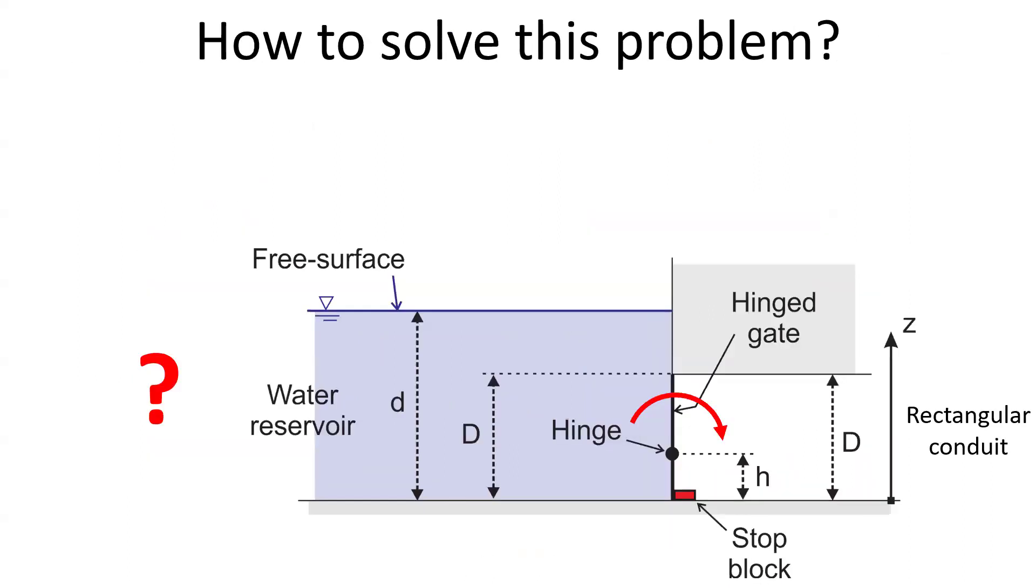How to solve this problem? Like with any engineering problem, the starting point is to draw the relevant sketch with the appropriate boundary conditions and suitable notations. The sketch is in front of us with the reservoir on the left hand side, the rectangular conduit on the right hand side.